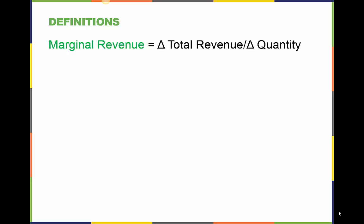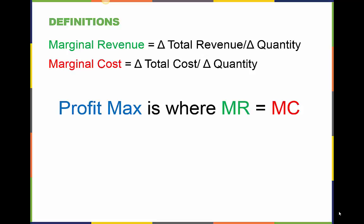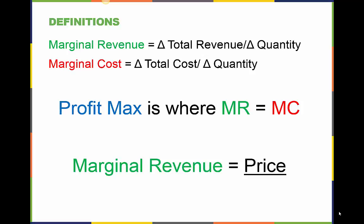Marginal analysis is very useful when we analyze markets. Marginal revenue is determined when the change in total revenue is divided by the change in total quantity. On the other hand, marginal cost is derived by dividing the change in total cost by the change in total quantity. Finding the profit maximizing point for a firm is easy when we use these marginal trends because the point where the marginal revenue equals marginal cost is the profit maximizing level of production.